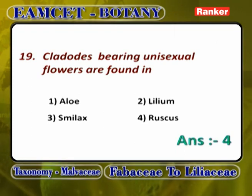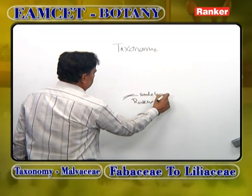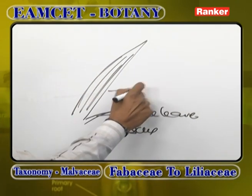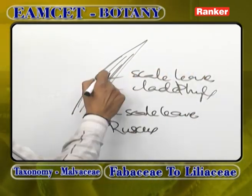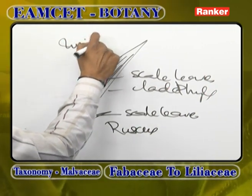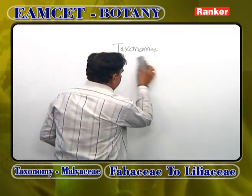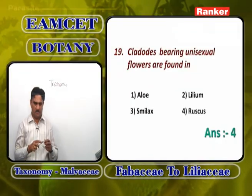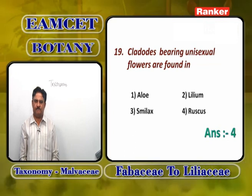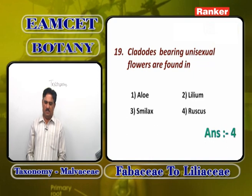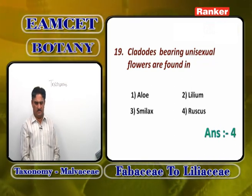Cladodes bearing unisexual flowers are found in Ruscus. In Ruscus, scale leaves are present; from scale leaves a leaf-like cladophyll or cladode develops. On this cladode another scale leaf develops, and from its axils unisexual flowers emerge. Two plants of Liliaceae show unisexual flowers: Smilax and Ruscus. But cladodes are present only in Ruscus, not Smilax. Aloe barbadensis and Lilium have bisexual flowers. Answer is 4.